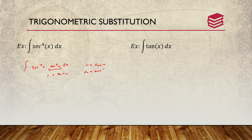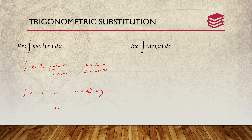Rewriting the equation using u-substitution, you have the integral of (1 + u²) du. Solving this gives u + u³/3. Replacing u back in, the answer is tan(x) + tan³(x)/3 + C.